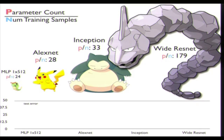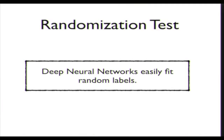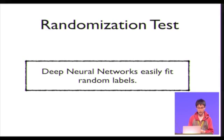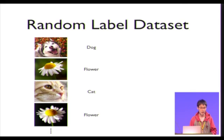In order to do that, let me introduce the randomization test. Before I show you the details, I just want to show the punchline first: we found that deep neural networks can easily fit random labels. So what exactly is the randomization test?